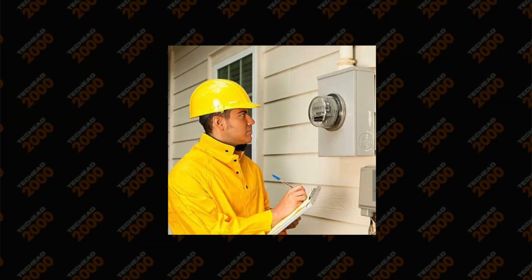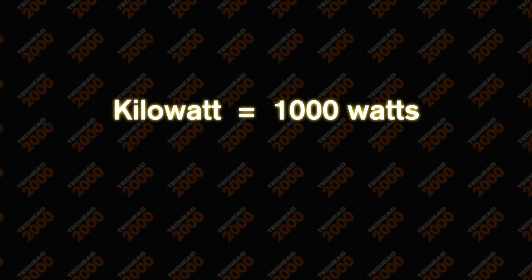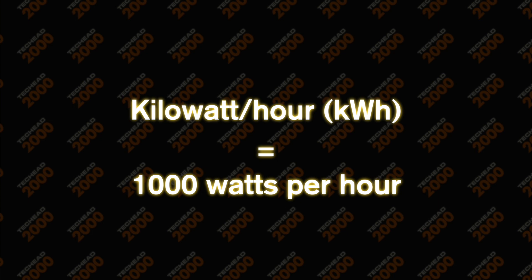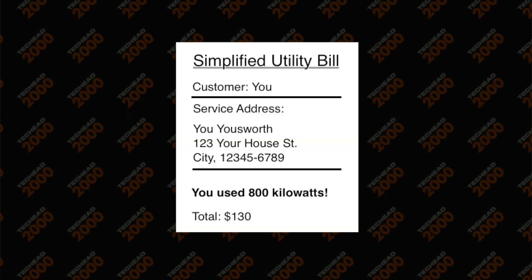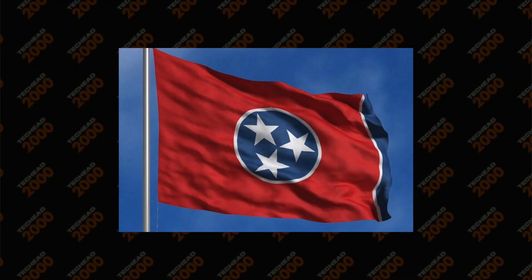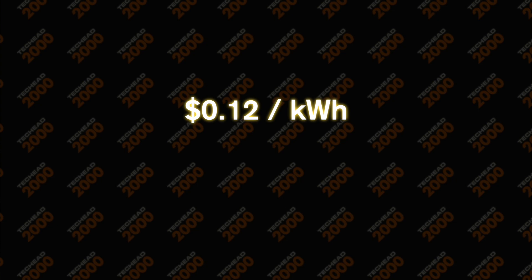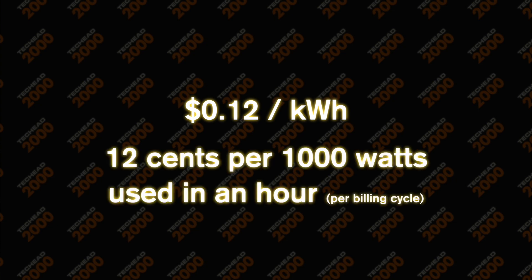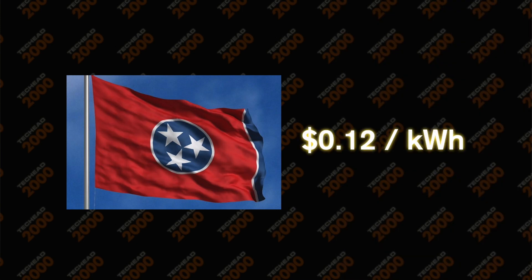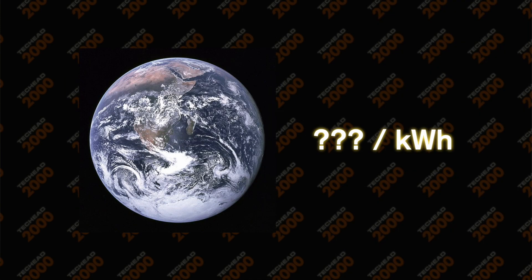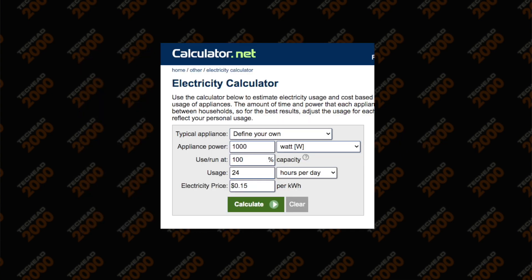Back to power companies. Electric companies measure how many watts of power you use in your home and then charge you a certain amount of money per kilowatt hour. A kilowatt is just a thousand watts, like a kilometer is a thousand meters, and a kilowatt hour is just a thousand watts used in an hour. You're charged for how many watts of electricity you use during the billing cycle, which is typically a month. I live in Tennessee, and in the city I live in, residents are charged around 12 cents per kilowatt hour — or 12 cents per thousand watts of power used per hour. But how much power does stuff actually use?